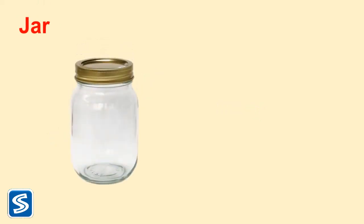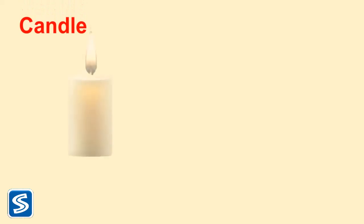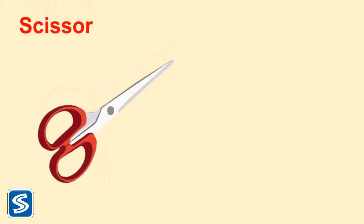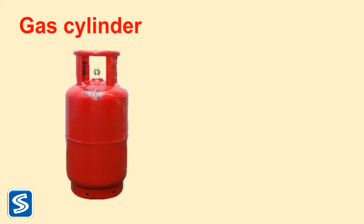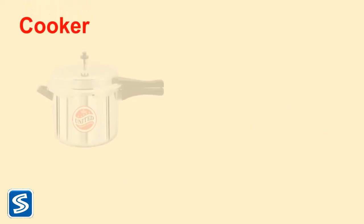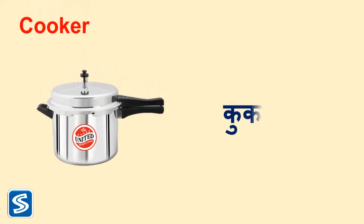Jar — martban. Candle — mombati. Scissor — kenchi. Gas cylinder — gas cylinder. Cooker — cooker.